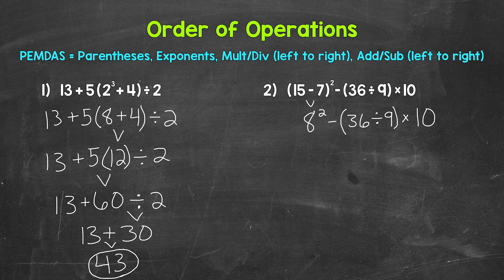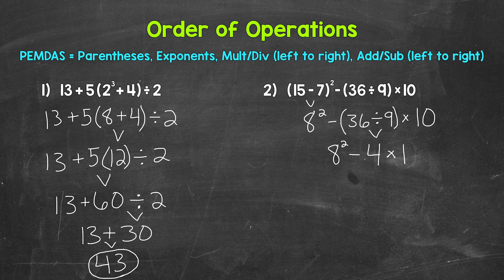So let's continue to work through the order of operations. Do we have anything within parentheses? Yes, we have 36 divided by 9. So let's do that next. 36 divided by 9 is 4. Bring down everything we did not use. So 8 squared minus 4 times 10.